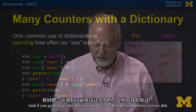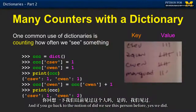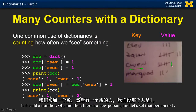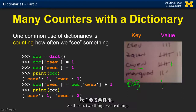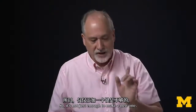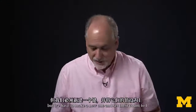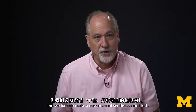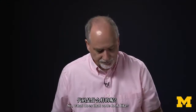If you go back to the notion of: did we see this person before? Yes, we did — let's add a number. And then there's a new person — let's set that person to one. So there are two things we're doing: if they exist, add one; if they don't exist, make a new one and set their count to one. It's not just enough to make a new one — we have to make a new one and set their count to one.